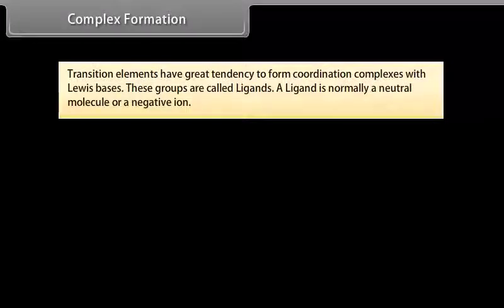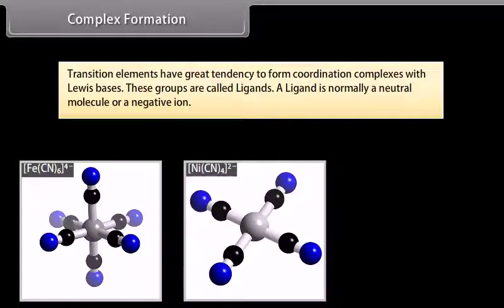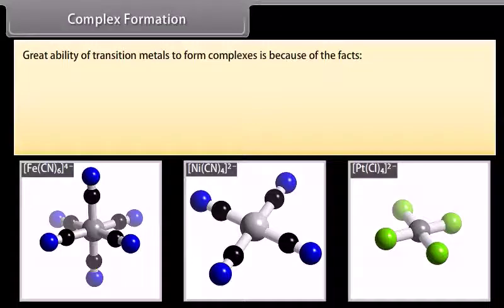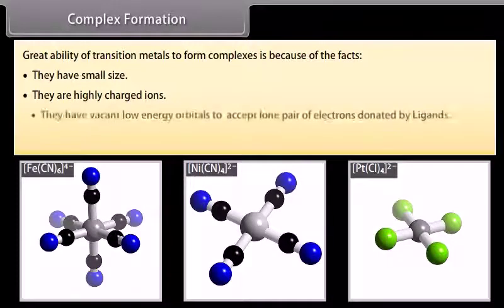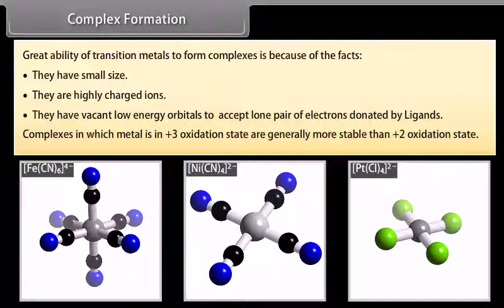Transition elements have a great tendency to form coordination complexes with Lewis bases, called ligands. A ligand is normally a neutral molecule or a negative ion. Examples include [Fe(CN)₆]⁴⁻, [Ni(CN)₄]²⁻, and [PtCl₄]²⁻. The great ability of transition metals to form complexes is because they have small size, are highly charged ions, and have vacant low-energy orbitals to accept lone pairs of electrons donated by ligands. Complexes in which metal is in +3 oxidation state are generally more stable than those in +2 oxidation state.